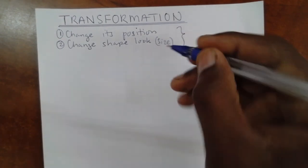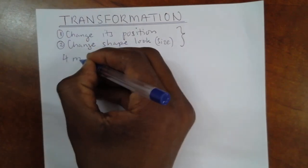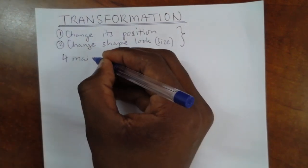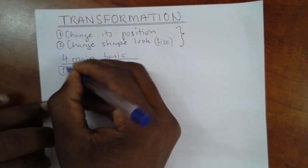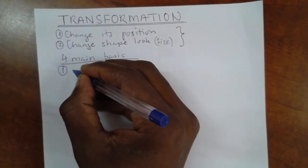Now in order for us to do any of these two kinds of transformation, we need to know four main basic transformations. Number one, we need to know about reflection.